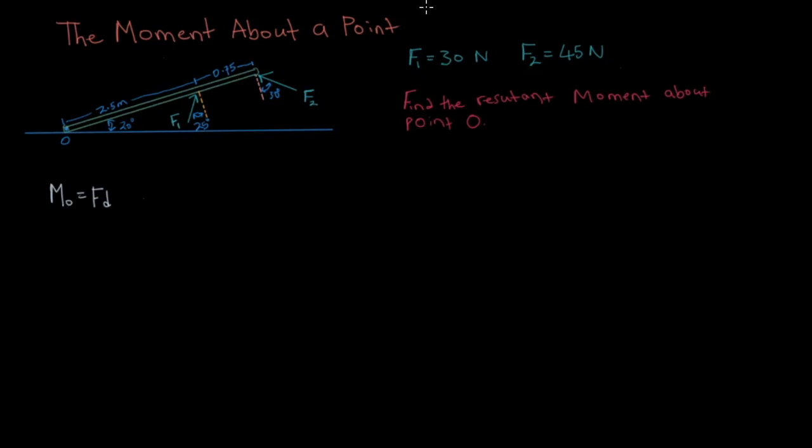In this video we're going to learn how to calculate the sum of moments about a point. In this problem here we have this bar and we have these two forces, F1 and F2. In this case F1 equals 30 newtons and F2 equals 45 newtons. The question is asking us to find the resultant moment about point O, the origin.